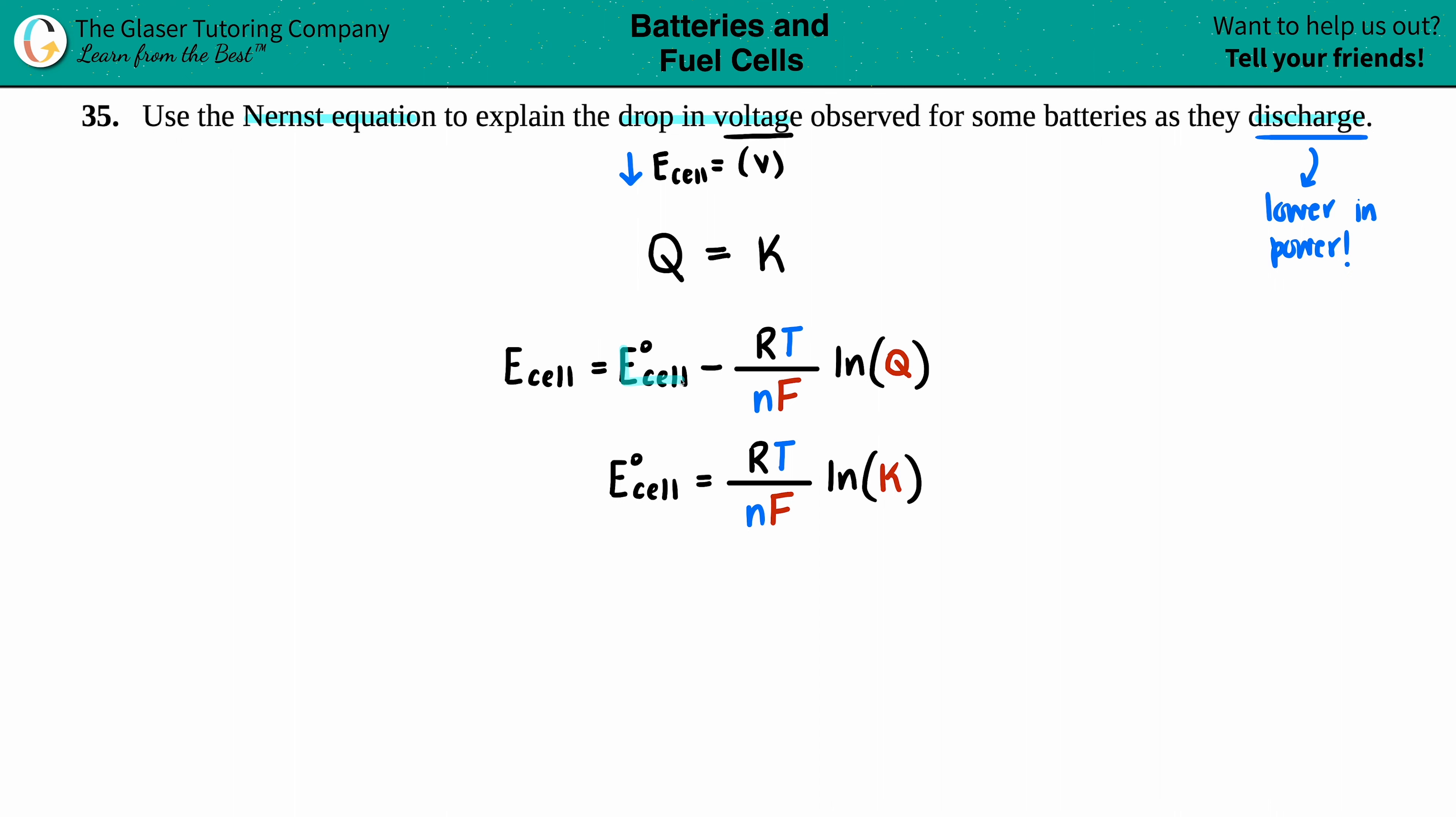You have the standard cell potential which equals this. So what I can do is substitute - take this and substitute it in for that, because that's what the E_cell standard equals. And now I'll have the Q and the K in one equation.